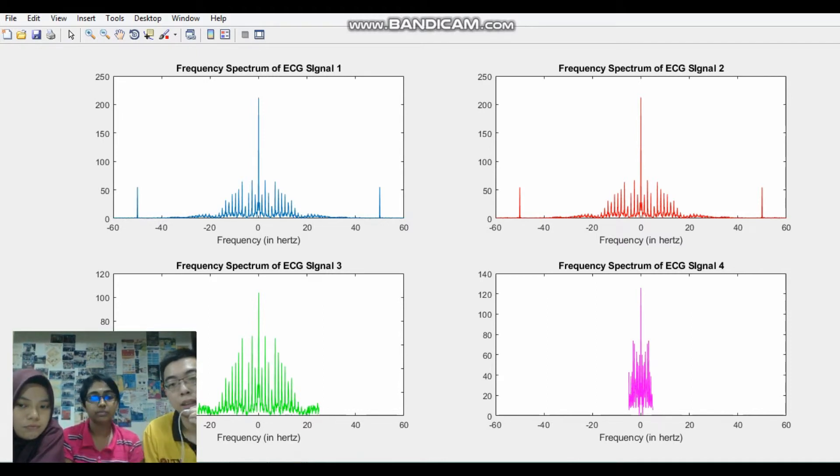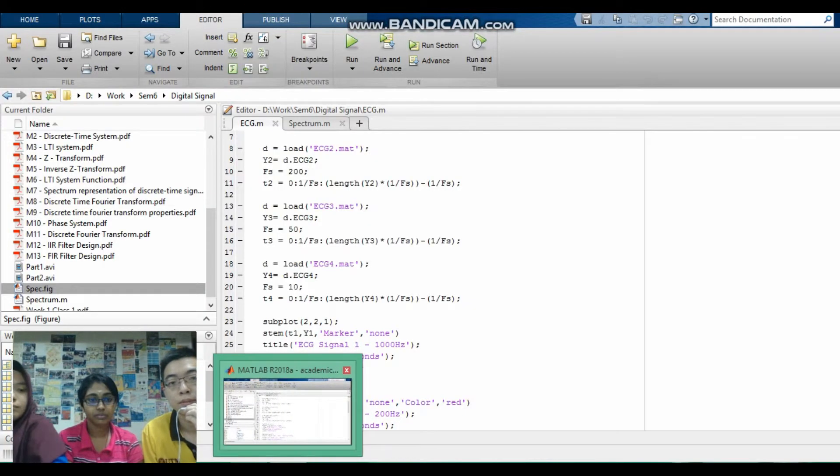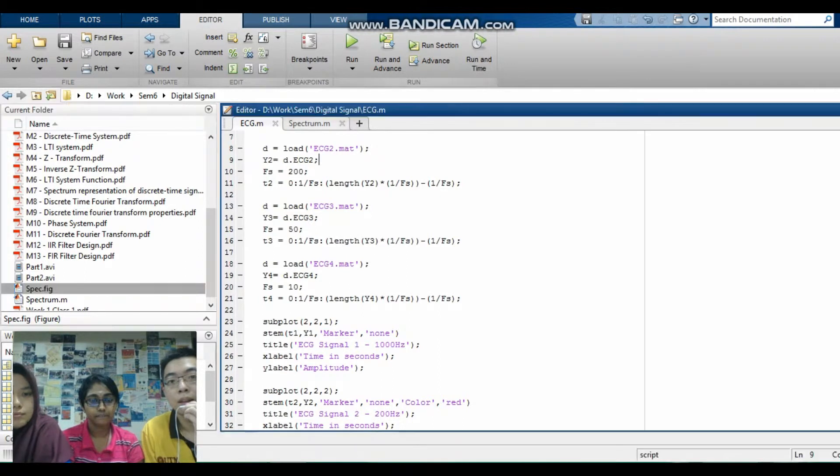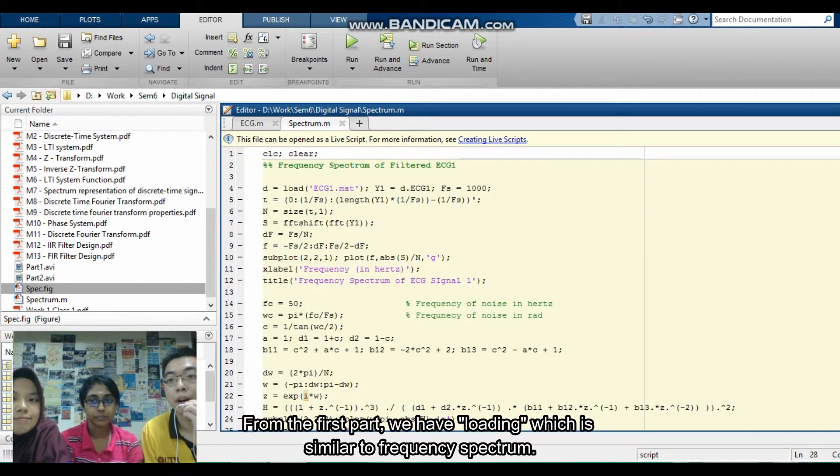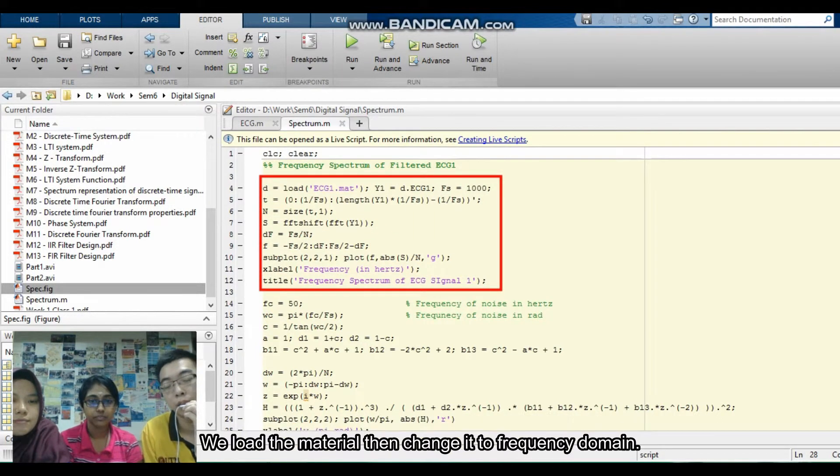Now I will be showing the coding for the filter of the signal. For our first part, we have the loading, which is the similar code with the frequency spectrum. We load the material and then we change it to the frequency domain.